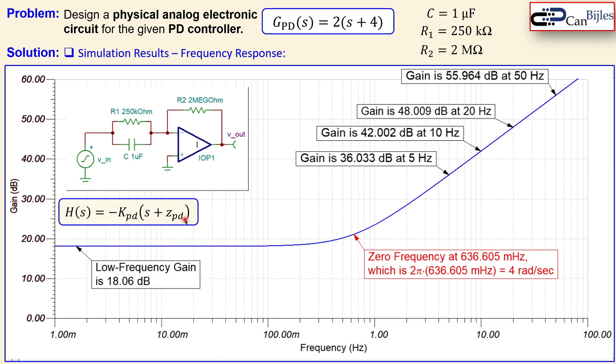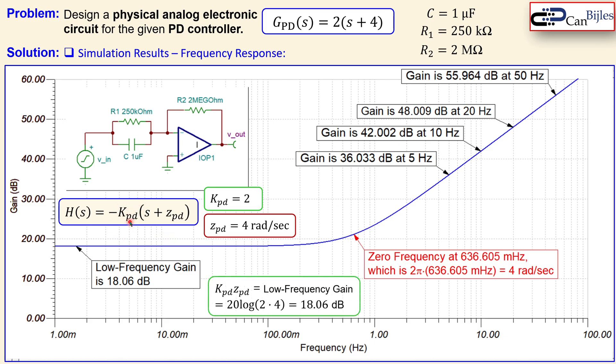First before that, this is the transfer function we have for this circuit. And the ZPD was 4 radians per second because that's for this system. And we have also KPD which was 2. Now what is now the KPD and what's the ZPD? Now the product of that one is called the low frequency gain.